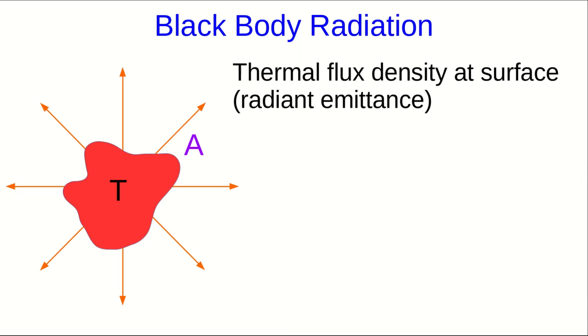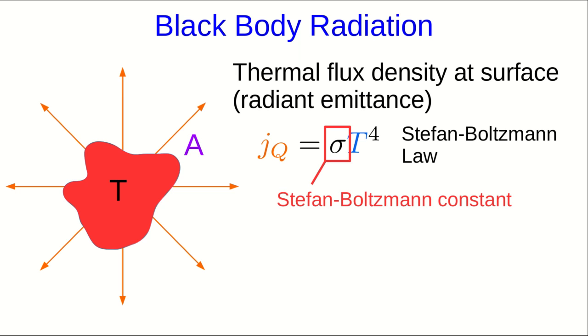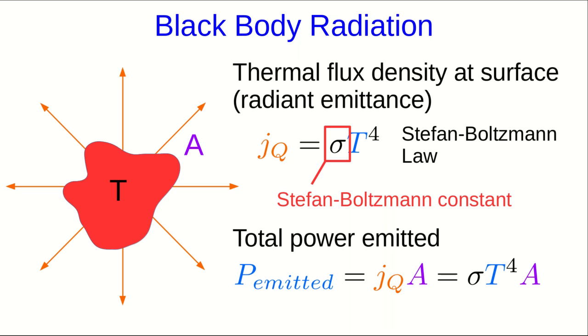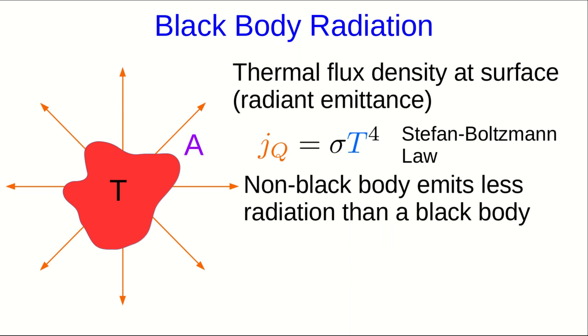I'm not going to derive the relationship between the thermal flux and the temperature of the black body. That would get us into a bunch of quantum mechanics that's way beyond this course, so I'll just give it to you. The thermal flux density at the surface of the object, which is also called radiant emittance, is proportional to the fourth power of the temperature. This is called the Stefan-Boltzmann law, and the constant out front is called the Stefan-Boltzmann constant. The total power emitted is just that thermal flux density times the area of the surface of the object. A non-black body emits less than this, and so we put a factor out front to reflect this, which is called the emissivity.